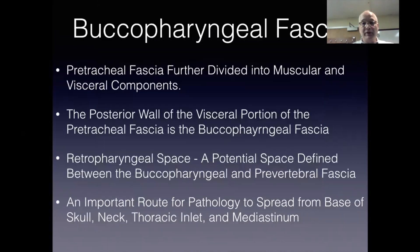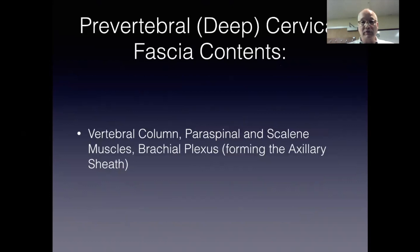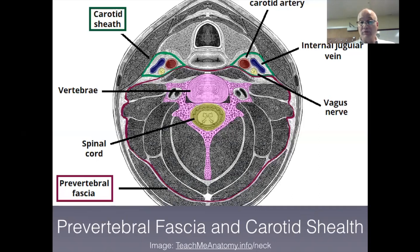The pretracheal fascia can be further divided into muscular and visceral components. The posterior wall of the visceral component of the pretracheal fascia is the buccopharyngeal fascia, and this is important because the potential space between the buccopharyngeal and prevertebral fascia is the retropharyngeal space. Again, this is normally a potential space — we don't tend to see this space unless it's filled with pathology. The deepest cervical fascial space will be the prevertebral fascia, which encloses all of the perispinal muscles, including the scalene muscle and the vertebral column.